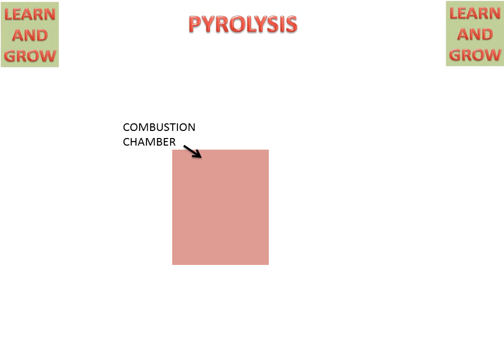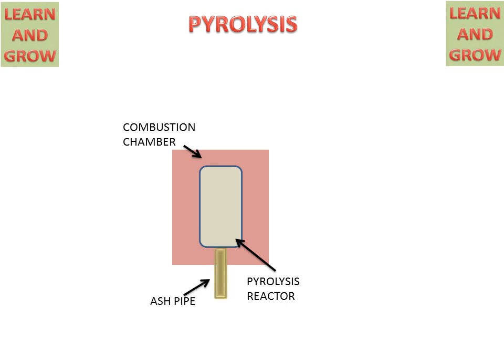First, we will discuss the parts of the pyrolysis process. We have a combustion chamber in which there is a pyrolysis reactor. An ash pipe is connected to the pyrolysis reactor for collecting ash particles, and an air pipe supplies air to the combustion chamber for combustion. Importantly, the pyrolysis process is done in the absence of oxygen.